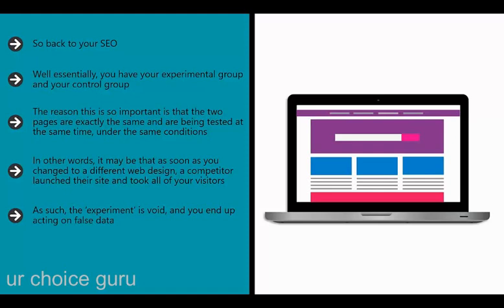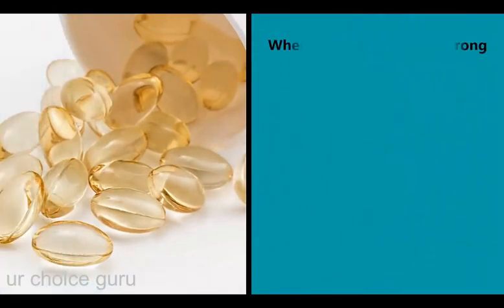Likewise, if you simply adopt some changes in your next article, you couldn't know for certain that any boost or drop in performance wasn't simply due to the content of that article being better or worse. Split testing is the only way to be certain that you have controlled for as many variables as possible.